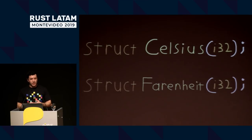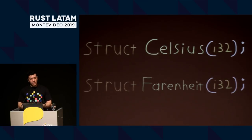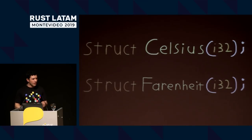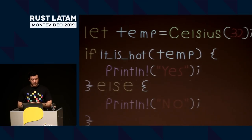We can prevent that using what's known as a new type. You define a struct and give it an internal value without a name for the field. So in this case, we define a struct Celsius with an internal 32-bit field, and a struct Fahrenheit also with a 32-bit integer inside of it. Let's look at that code in a different way.